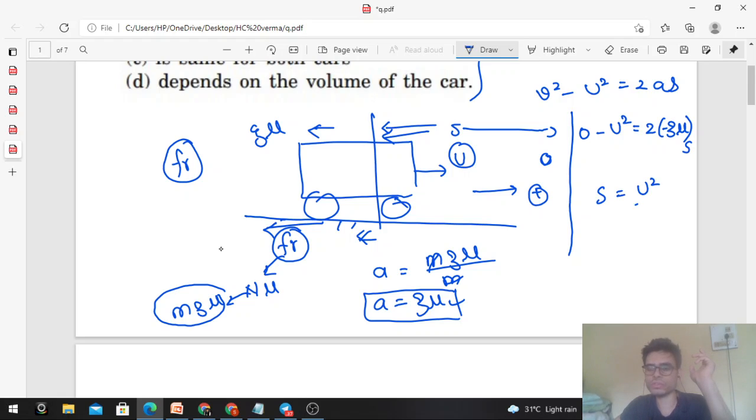So the value of s comes out as u² upon 2*g*μ. This is the value of minimum stopping distance. You can see it is independent of the mass, independent of the mass of the car.